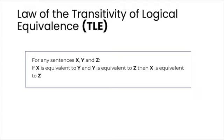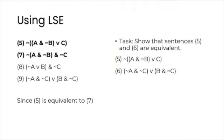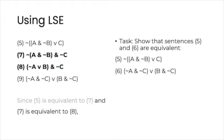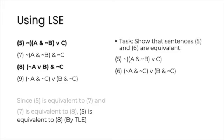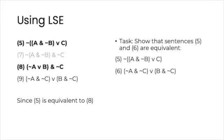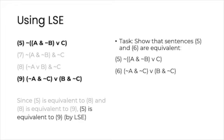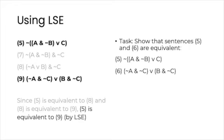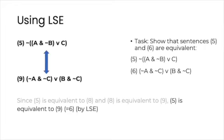So, armed with the transitivity law, since 5 is equivalent to 7, and 7 is equivalent to 8, 5 is equivalent to 8, by TLE. Moreover, since 5 is equivalent to 8, and 8 is equivalent to 9, 5 is equivalent to 9, this time by LSE. But 9 is equivalent to our target sentence, so we are done. We have shown that sentences 5 and 6 are equivalent.